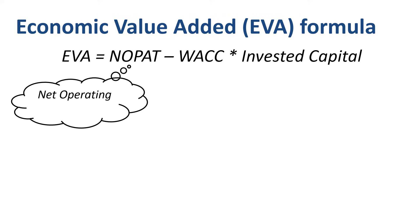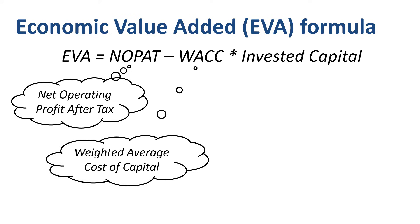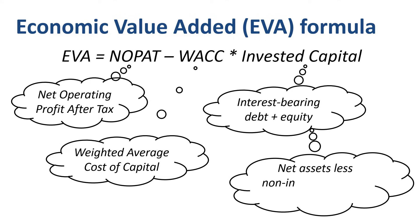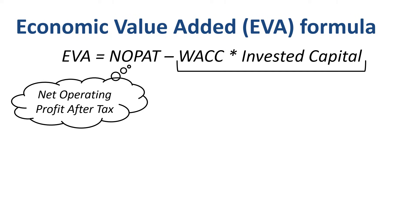NOPAT is net operating profit after tax. WACC is the weighted average cost of capital. Invested capital is interest-bearing debt plus equity, or, starting from the other side of the balance sheet, net assets less non-interest-bearing current liabilities. Both definitions of invested capital should get you to the same number. The second part of the formula is often summarized as the capital charge — the amount you deduct from NOPAT to get to Economic Value Added, a variation on the idea of residual income.